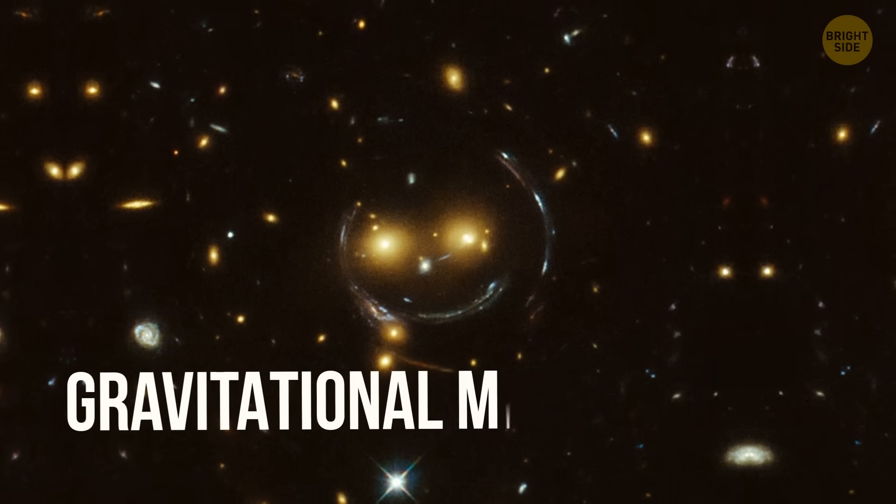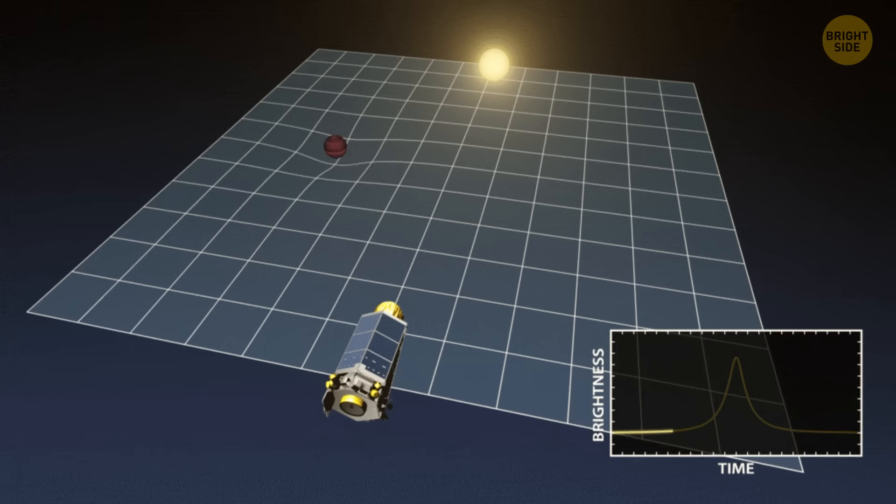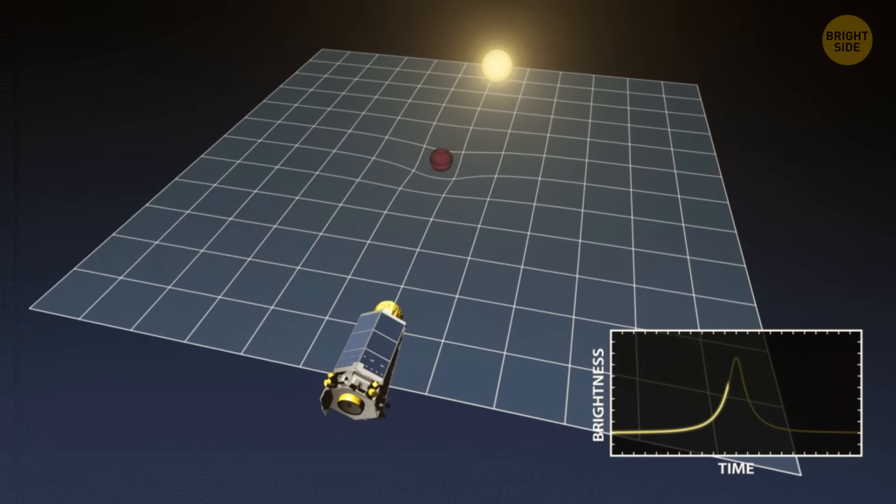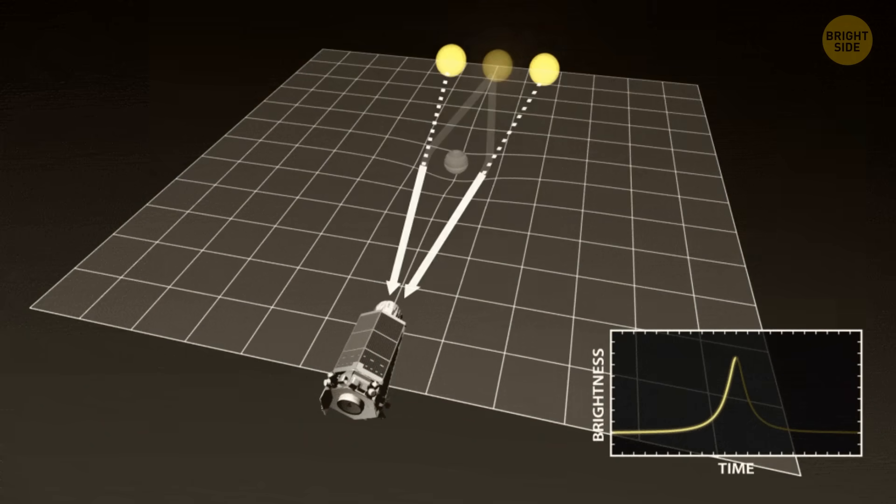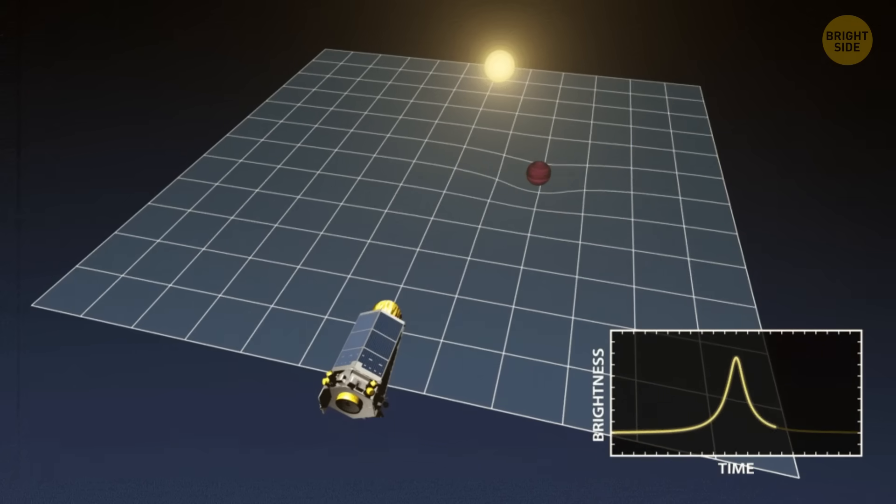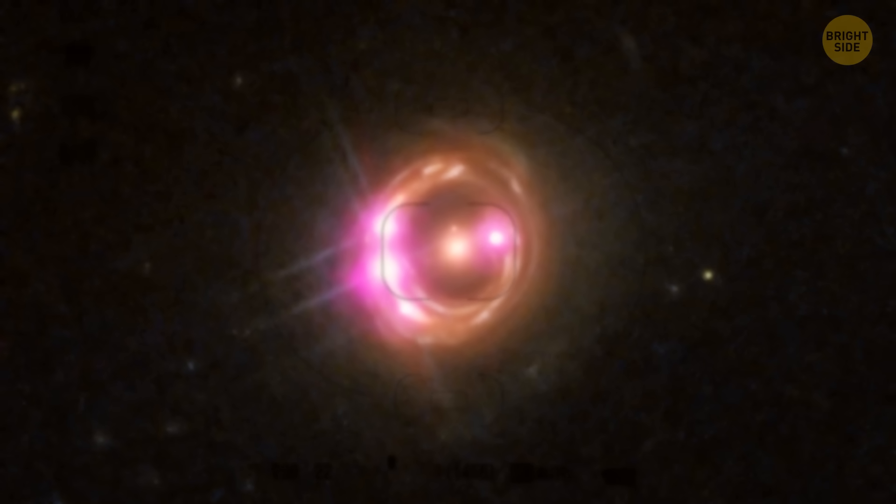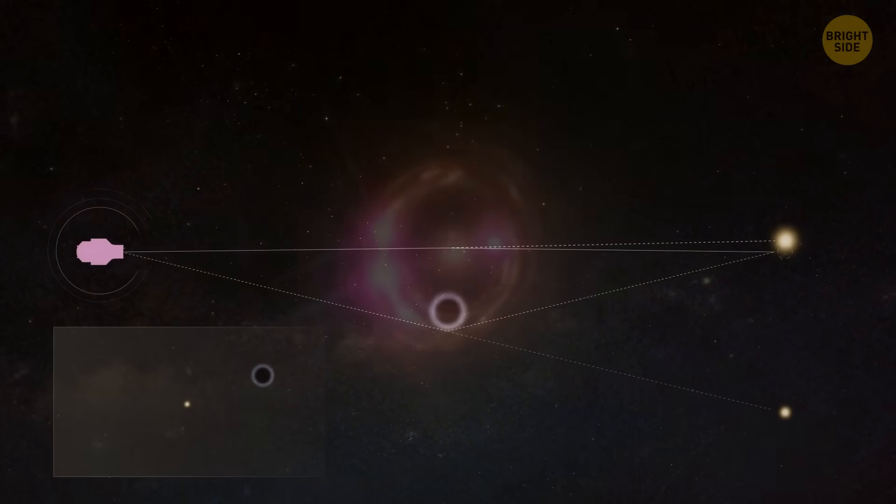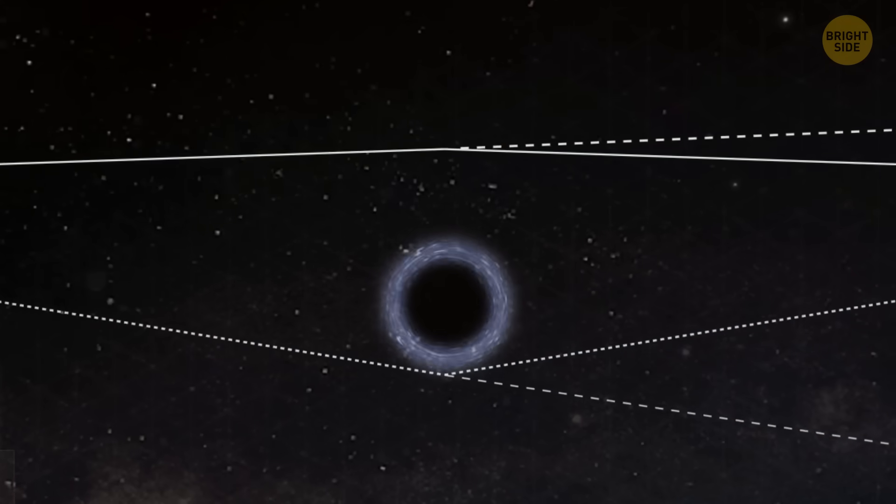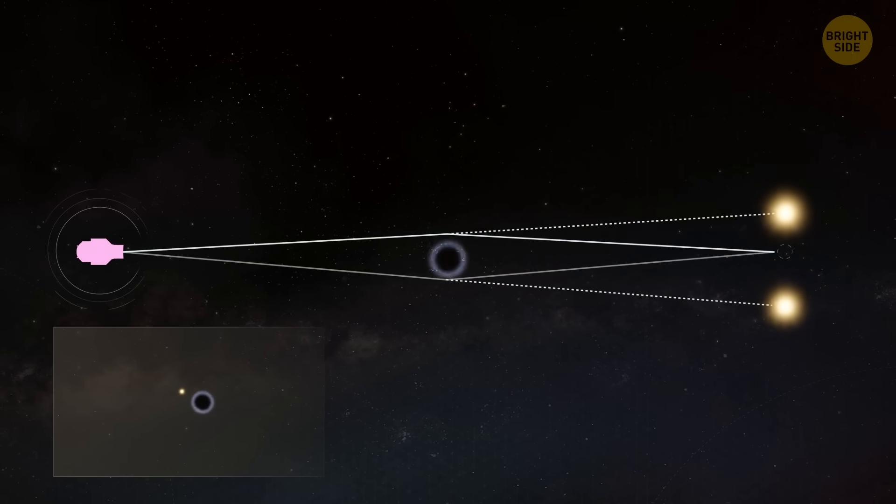They use something called gravitational microlensing. That's when the black hole's gravity bends and magnifies the light from a star located behind it. Kind of like using a magnifying glass, hence the name. This method allowed scientists to detect the black hole, even though it was completely dark.